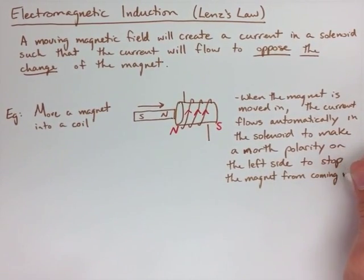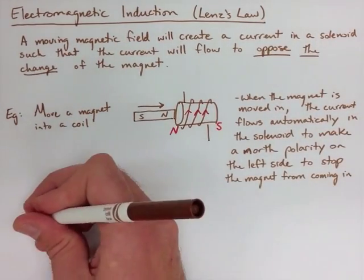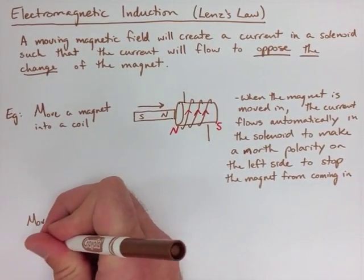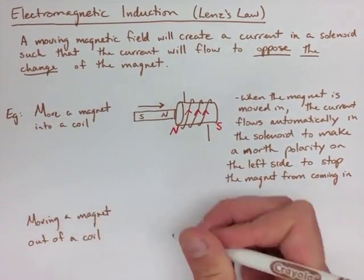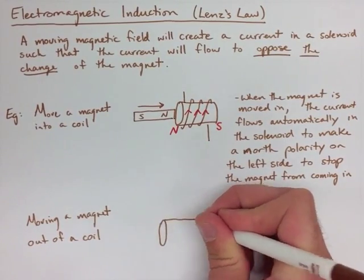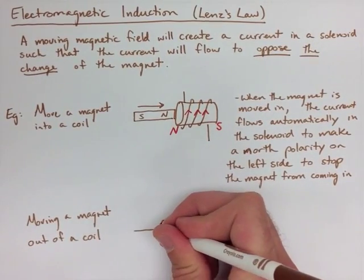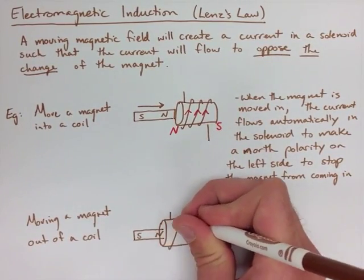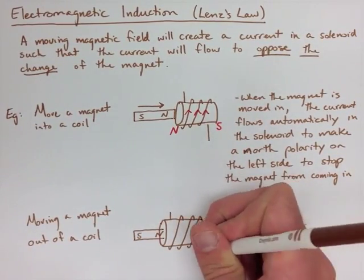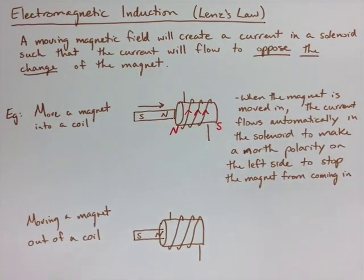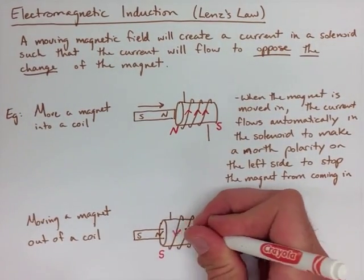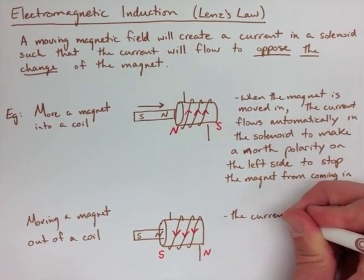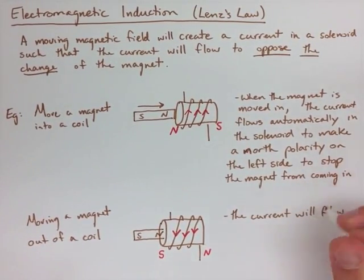Now in a very similar fashion, when we now try to pull that magnet out, the current's going to quickly flip in the solenoid, and it's going to now make a south end on the left side, and it's going to try to keep that magnet in the solenoid. It always opposes motion, so where we had a north end before, our current switches directions and makes a south end now. It's still opposing and trying to keep that magnet inside the solenoid now.